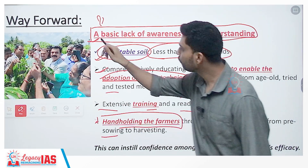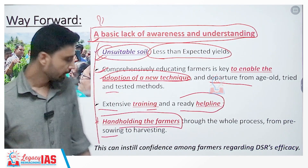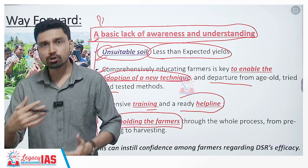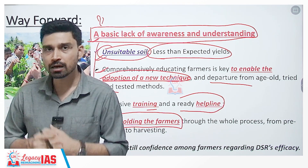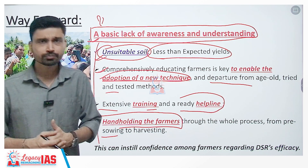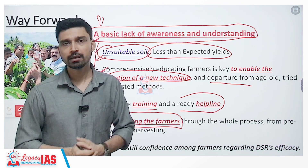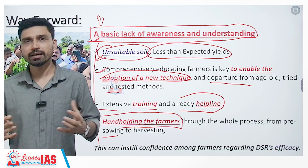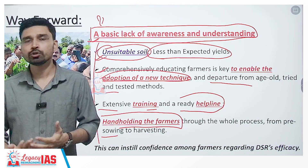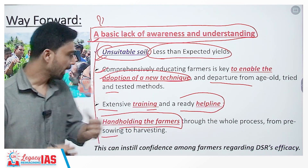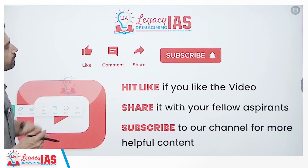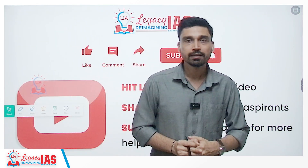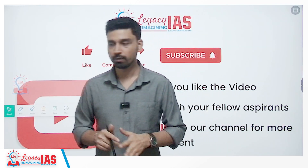Overall, if you are able to do these three to four steps, it will instill confidence among farmers regarding the efficacy of DSR. Once the method starts to show its results and the benefits we desire from it, the farming community — being well connected with each other — will spread the word and adoption will begin and speed up. That is all about this video. I hope you understood the concept of DSR, that is direct seeding of rice, along with its benefits and challenges in adoption. Thank you very much.